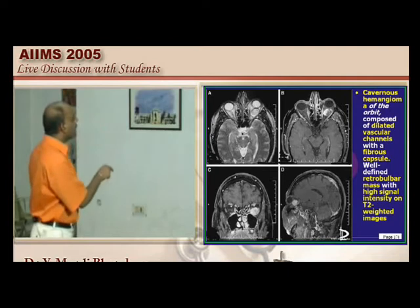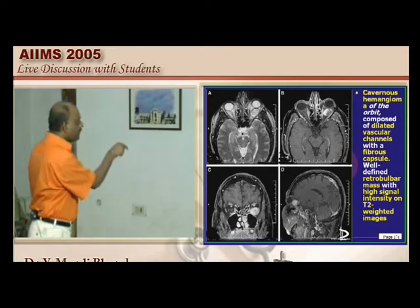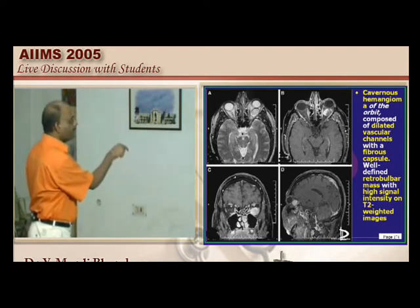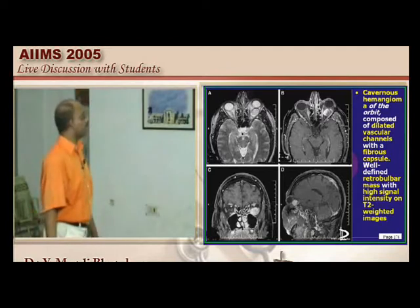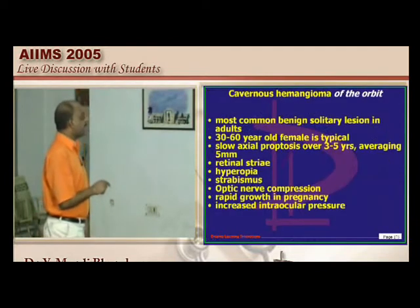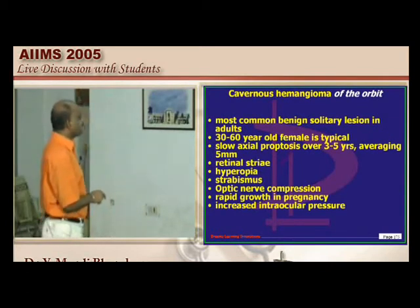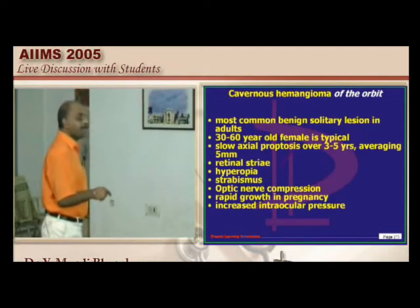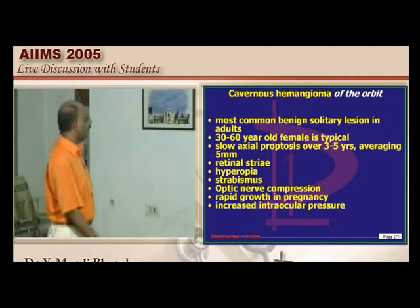This MRI shows a mass in the orbit compared to the normal eye — this is the orbital mass. The appearance of cavernous hemangioma of the orbit with dilated vascular channels can be identified on a T2-weighted image. It is the most common benign solitary lesion in adults. In women, pregnancy can cause it to grow rapidly, leading to increased ocular pressure, strabismus, and hyperopia.